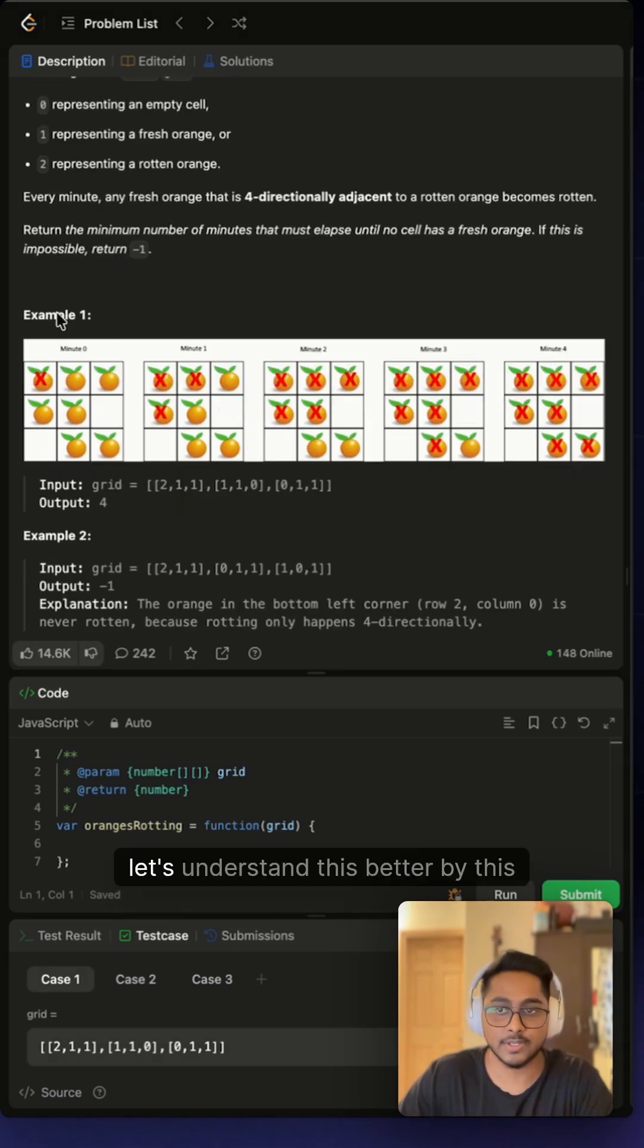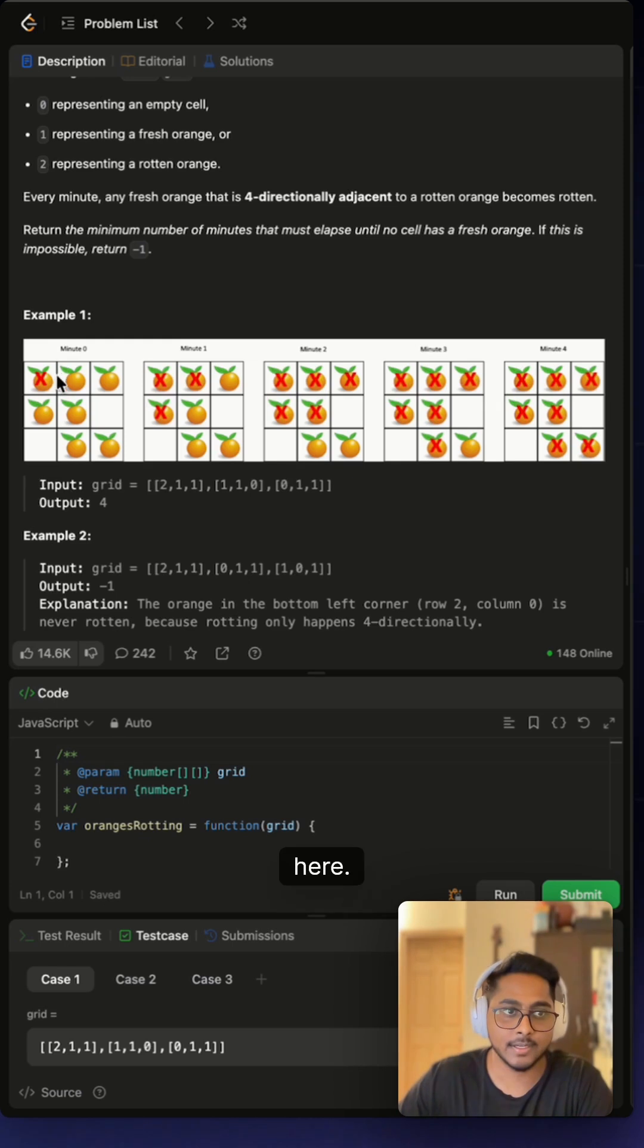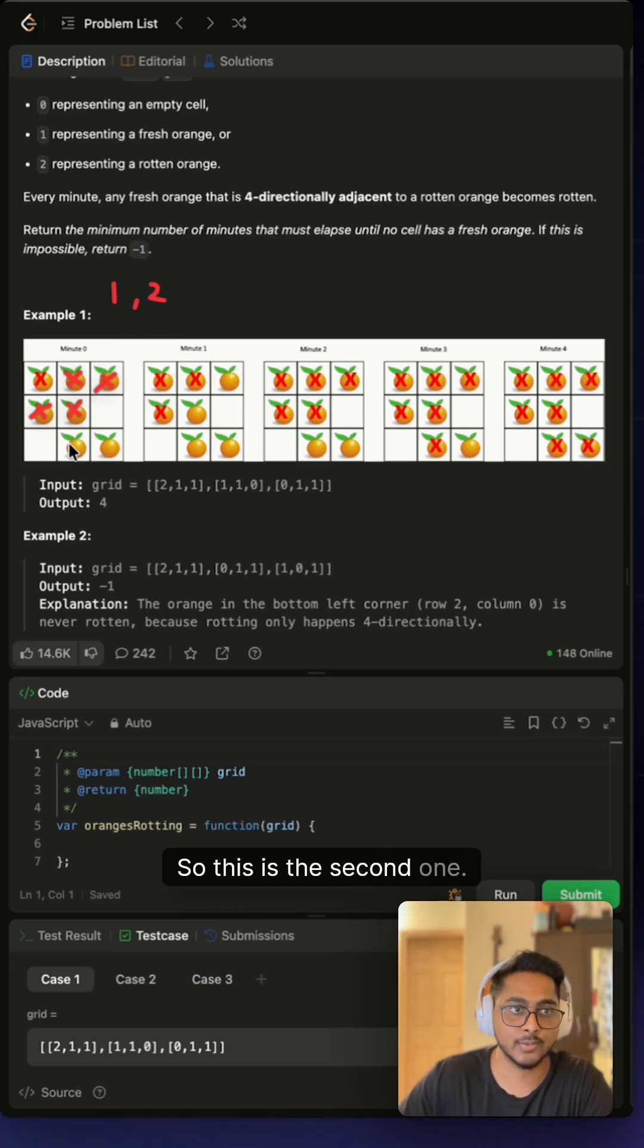we return minus one. Let's understand this better by this example. After the first minute these two oranges go rotten, so one minute is passed. After the first minute these two go rotten, so this is the second one.